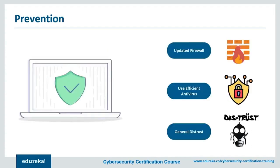Talking about prevention: the best defense is a good offense. In this case, an updated firewall is essential — make sure you have a working one in your office that protects you and your employees from these types of attacks. It is also a good idea to install a trusted antivirus or anti-spyware software program that can detect threats like these. A general level of distrust on the internet — not believing anything right off the bat — is also the way to go.